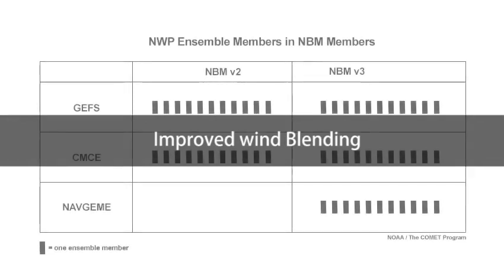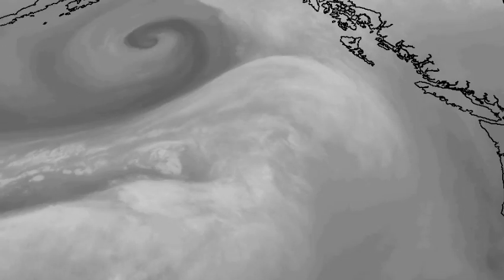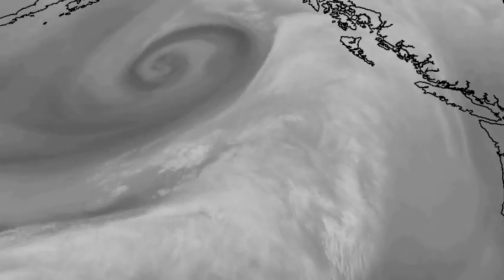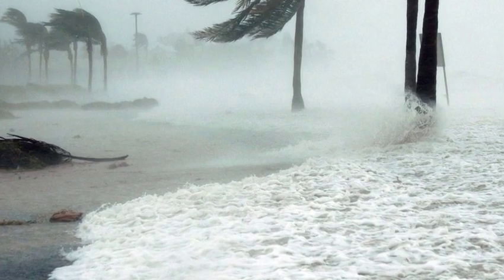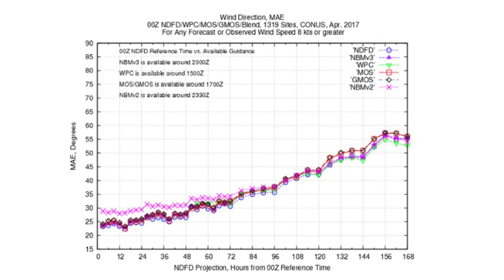With the addition of the Navy Ensemble, the number of ensemble members used to compute wind speed and direction increases from 42 to 63. The additional membership improves wind speed threshold probability products — for example, the probability of winds exceeding gale force. Version 3 of the NBM uses a new clustering method for determining mean wind direction. The new method has improved wind direction forecast skill, as seen in an example from April 2017.